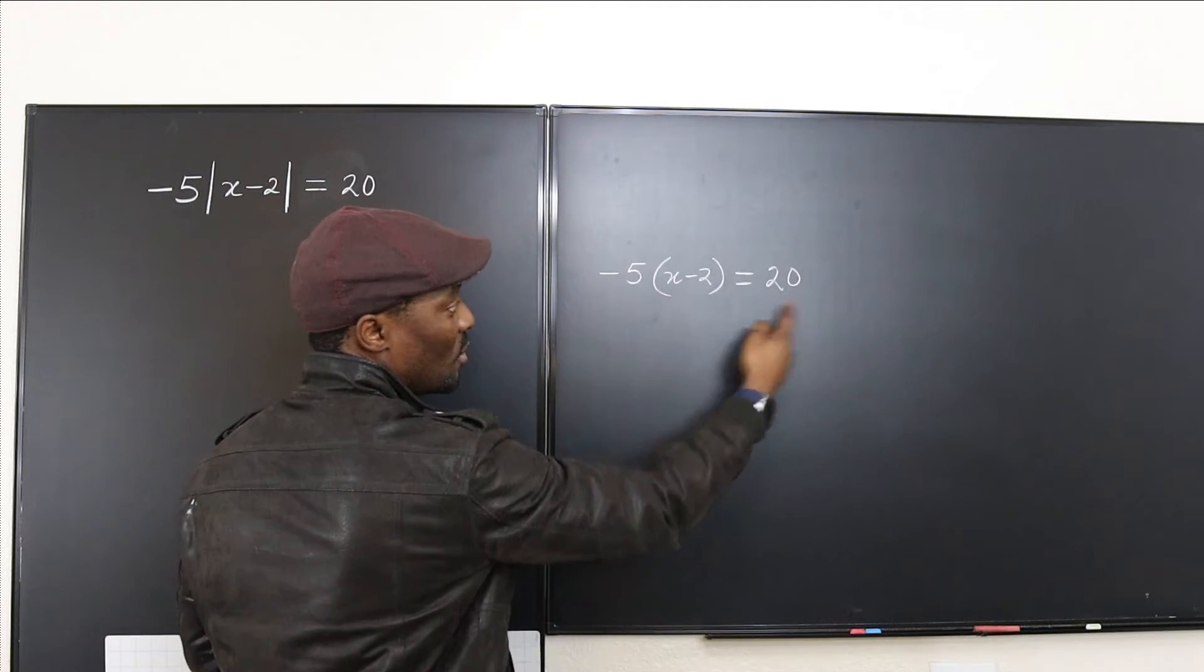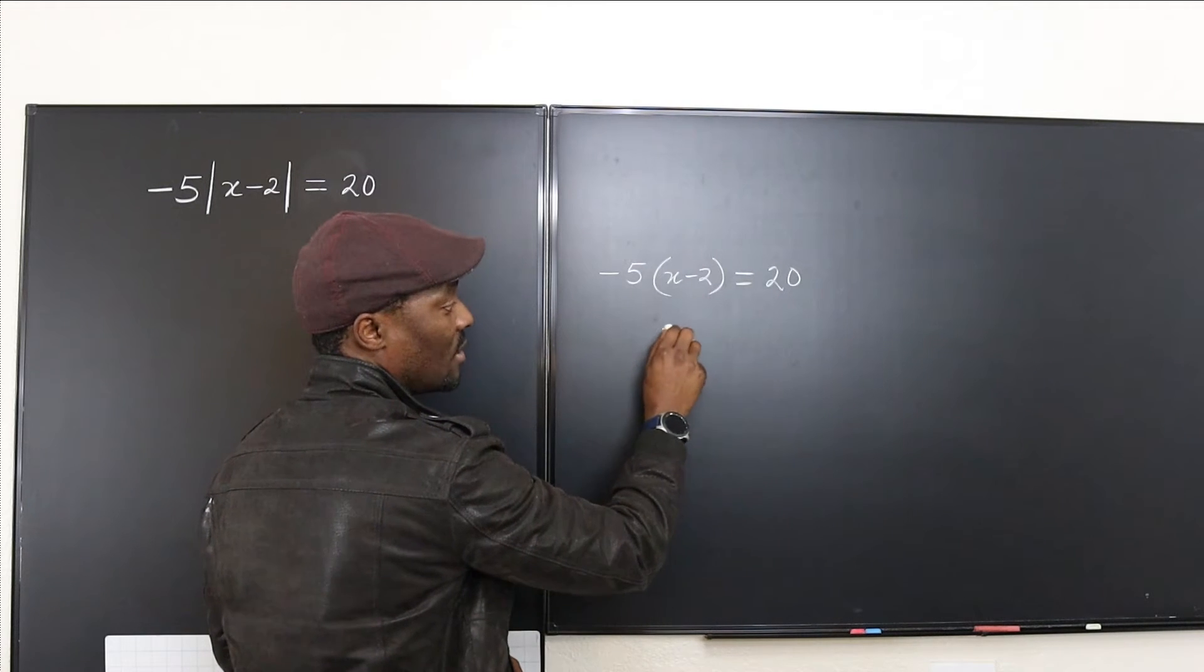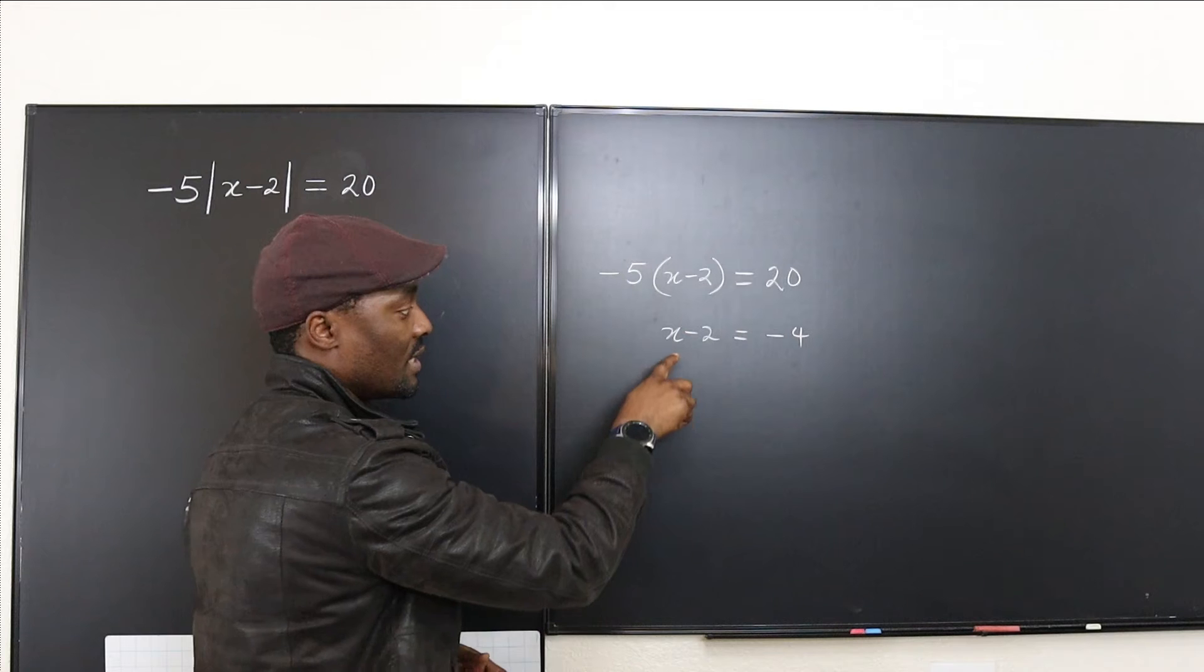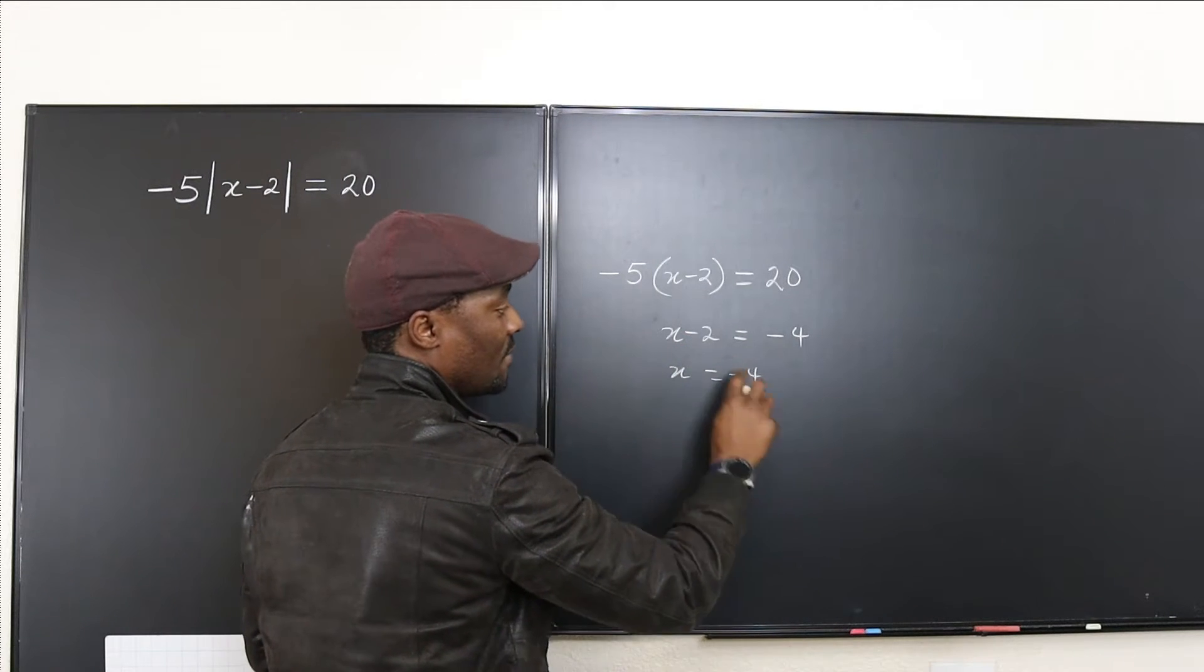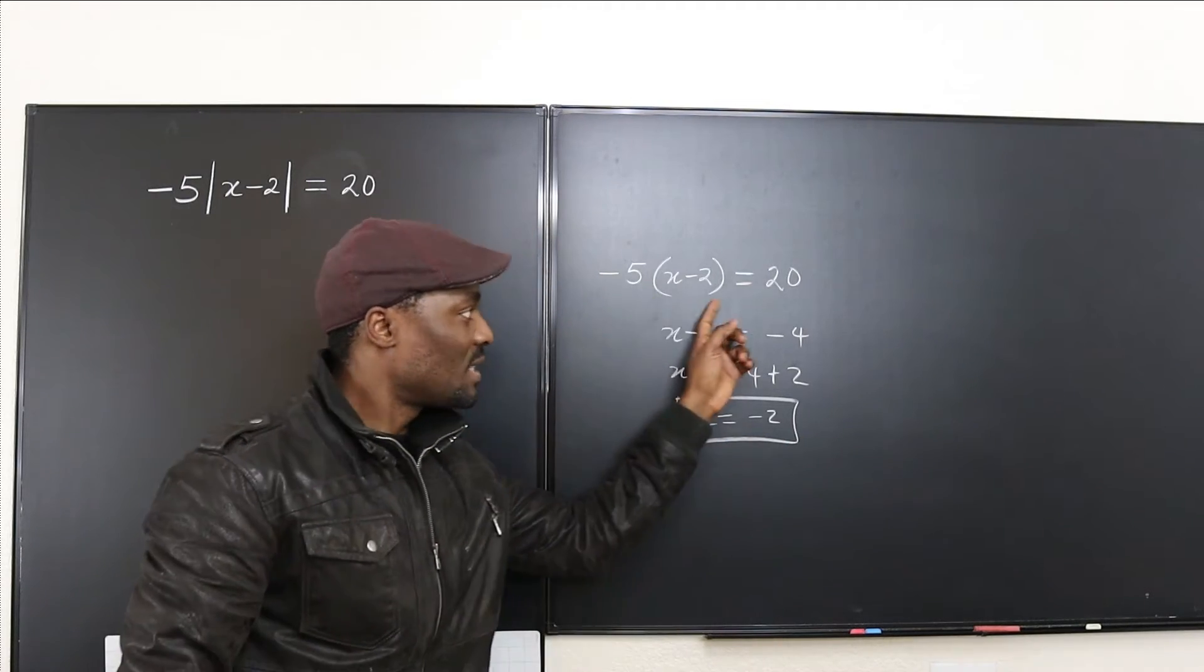solve this is to divide both sides by negative 5 first. If we divide both sides by negative 5, we'll end up with x minus 2, and this would be negative 4. Then we can say x will be negative 4 plus 2, which gives you negative 2. So this would be your answer if this was a parenthesis, but it's not.